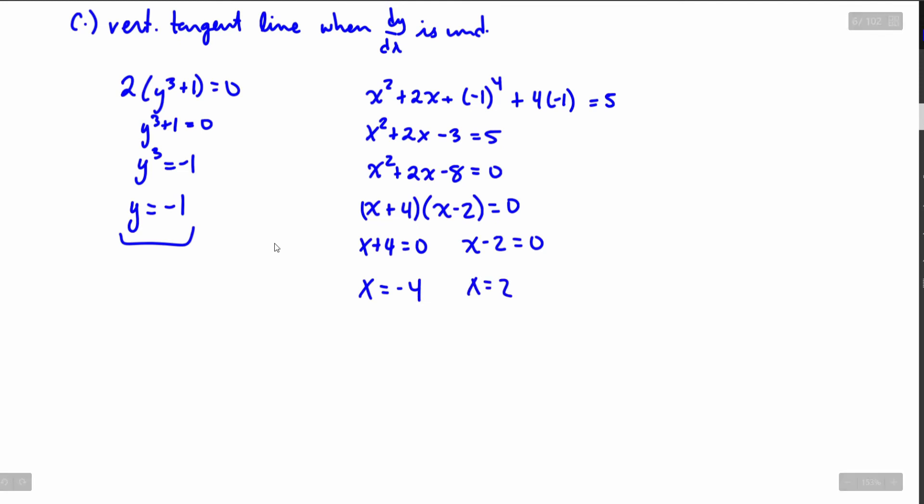But have I solved for the points? No. All I've found so far are two x values and one y value. Well I need to just combine it together and I'm going to say here that the two points are going to be negative 4 comma negative 1 and 2 comma negative 1.